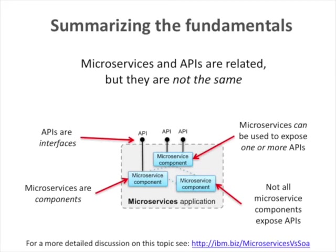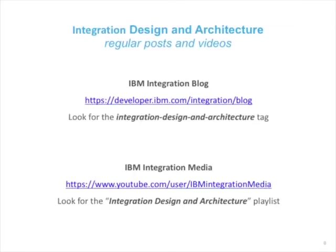We've skimmed over some pretty deep concepts here. Microservices architecture is non-trivial to understand, and when you start comparing it with things that came before it — like service-oriented architecture — that can really get quite nuanced. There's a link at the bottom of the slide that'll give you a route to an article describing all of these concepts in much more detail. As I mentioned at the beginning, we'll be doing various posts and videos on topics to do with integration design and architecture on the IBM Integration blog and on the Integration Media channel. I'll see you next time. Bye-bye.